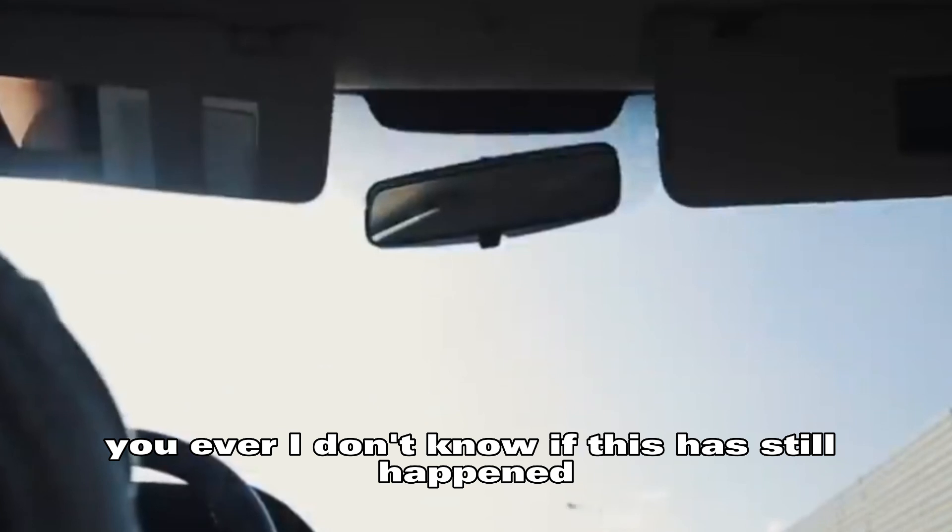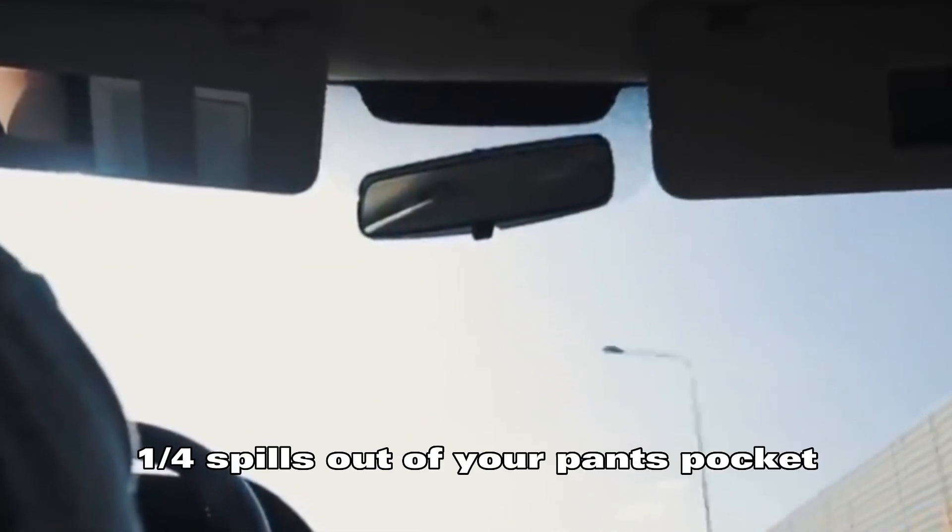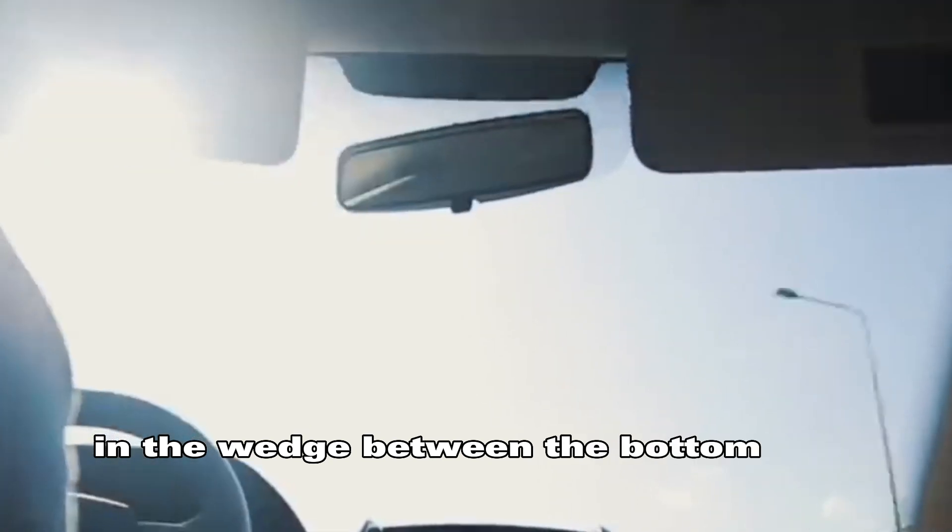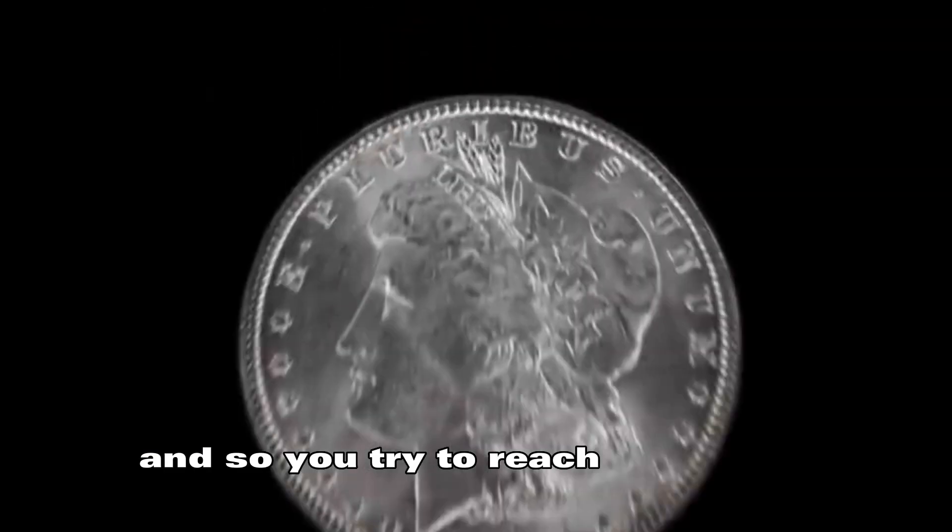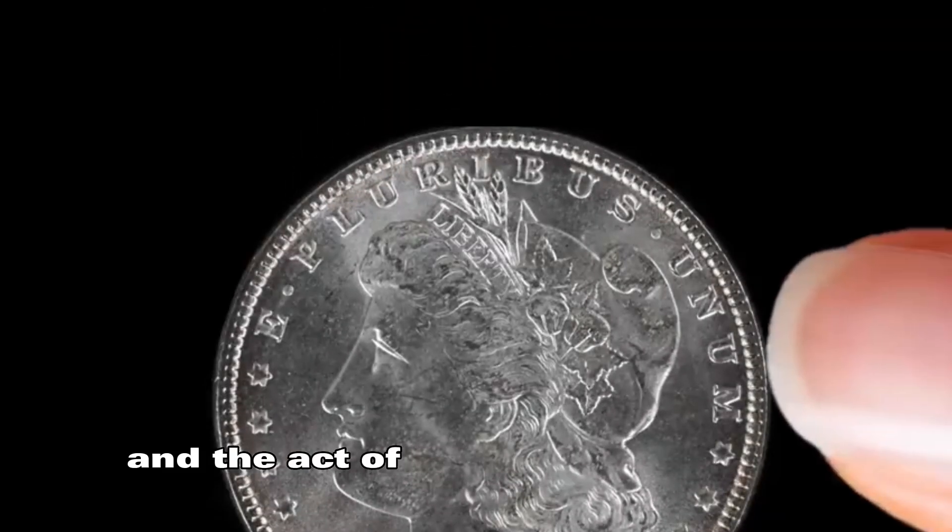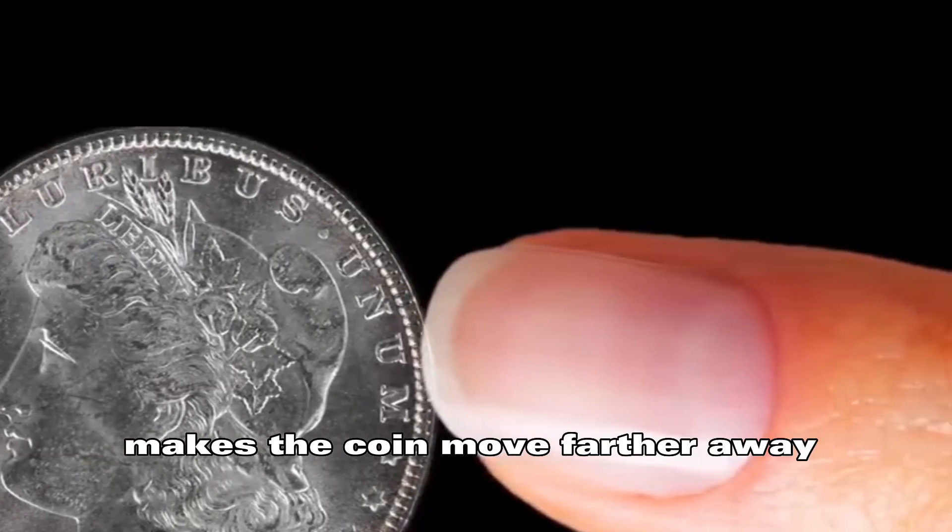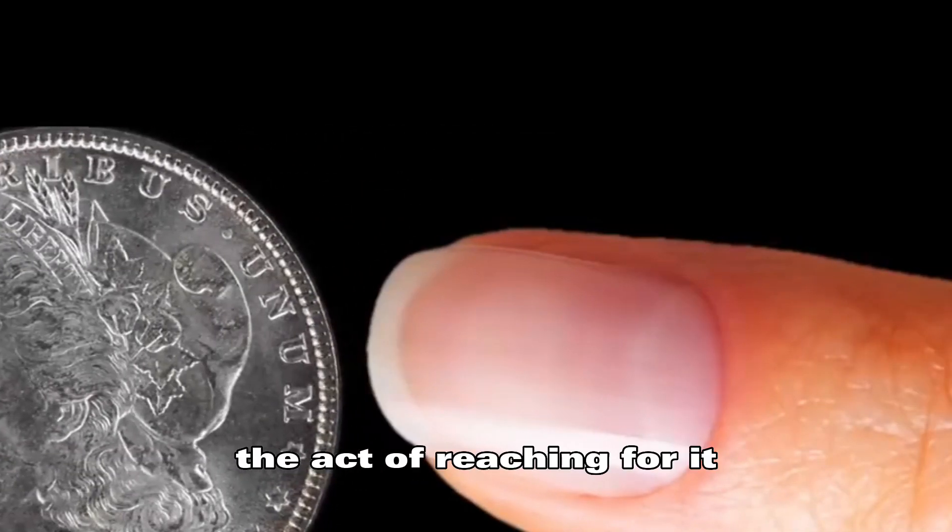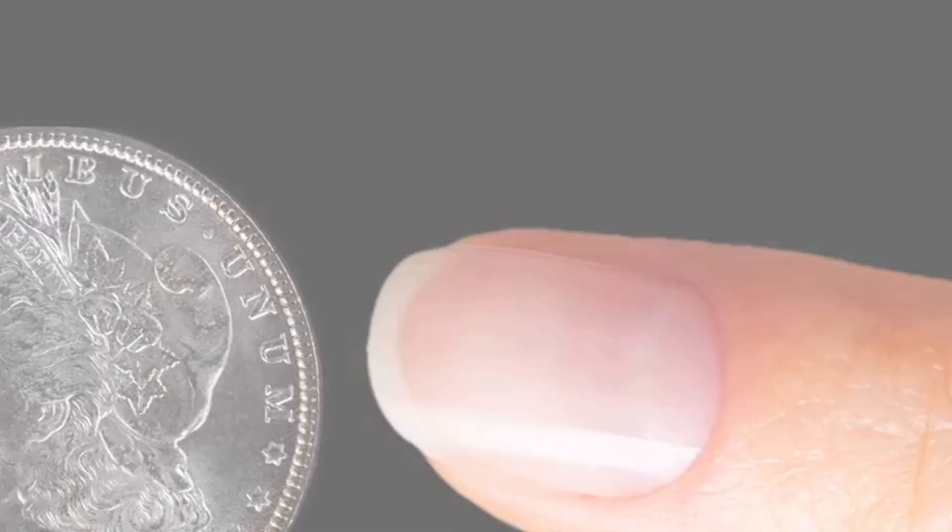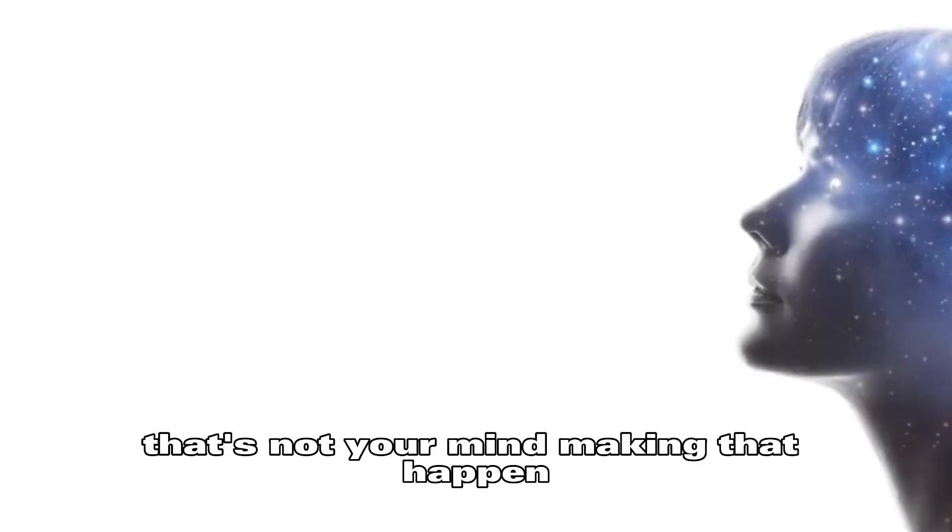You ever, I don't know if this will still happen, a quarter spills out of your pants pocket in the backseat of a car and it's there in the wedge between the bottom and the backseat. And so you try to reach in to get it and the act of reaching for the coin makes the coin move farther away from you. The act of reaching for it just slides down even further. That's not your mind making that happen. It's the act of the measurement that is affecting what it is you're trying to measure.